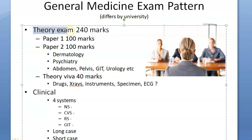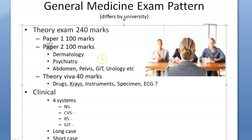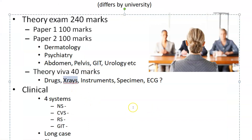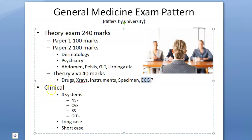For theory, you can have Paper 1 and Paper 2. Paper 2 usually covers Dermatology, Psychiatry, and areas below the chest - abdomen, pelvis, GIT, and urology. You will also have a theory viva covering drugs like morphine, X-rays such as consolidation in the lungs, instruments like IV cannula, specimens such as an emphysema lung, and ECGs where you identify rhythms like atrial fibrillation.